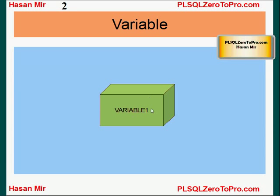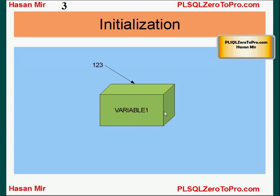So what's a variable? A variable is simply a placeholder in the memory. A placeholder is something that will store some value in it. So you create a placeholder by declaring a variable, and later on you put a value in this placeholder. That's called initialization. You initialize the variable by putting some value in it. So the value goes in the variable so that you can refer to that value any time later on in the program.